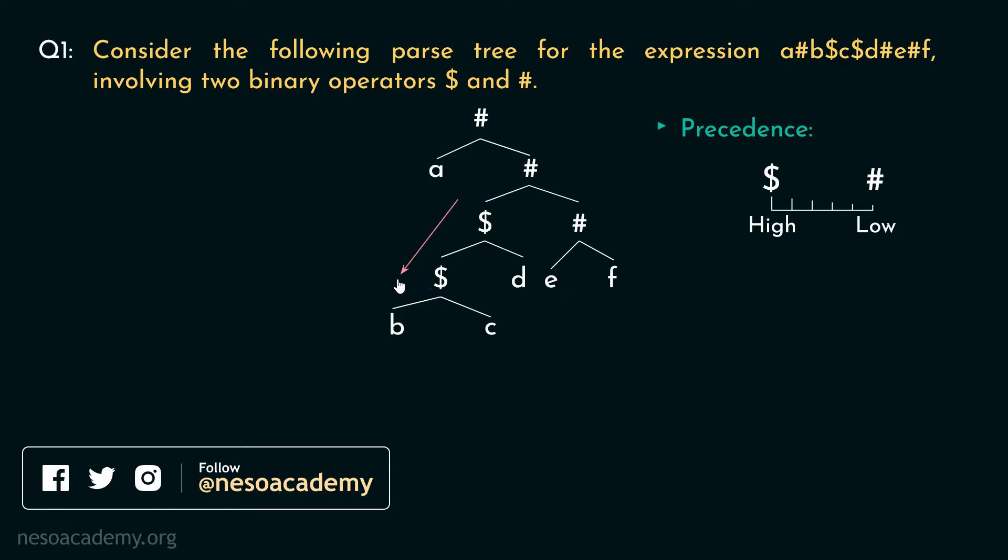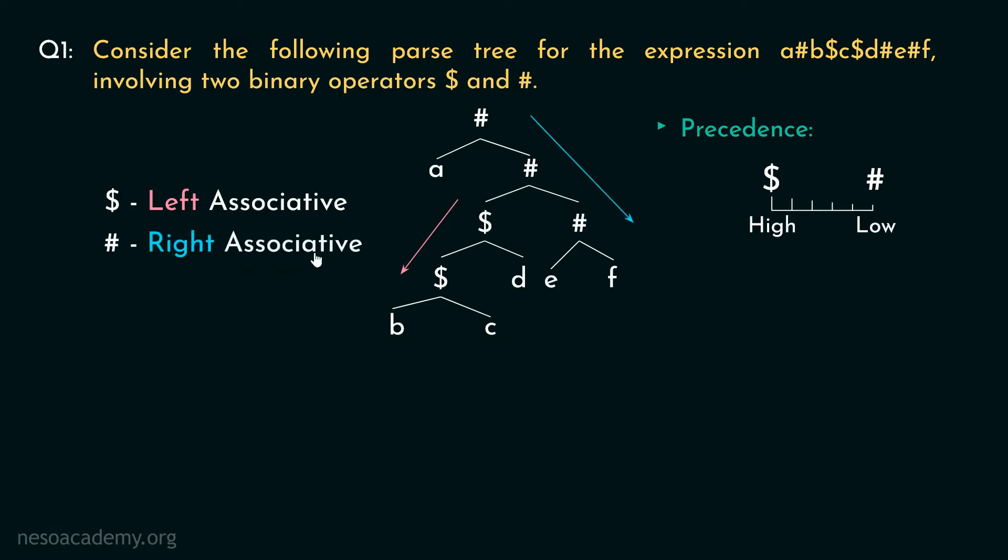Do you remember the session associativity violation and solution in CFGs? There we learned the left recursive production rules restrict the parse tree to expand only in one direction that is left. So for obvious reasons dollar is left associative. On the other hand the expansion of the hash symbol is towards right only. So we can deduce the hash is right associative.